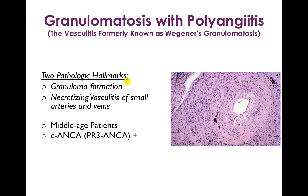Now let's get into the ANCA-associated vasculitides. The first is granulomatosis with polyangiitis, formerly known as Wegener's granulomatosis. The name was officially changed around 2012-2013 because Wegener turned out to be a Nazi. The new name is actually more descriptive — the two pathologic hallmarks are granuloma formation and necrotizing vasculitis of the small arteries and veins.